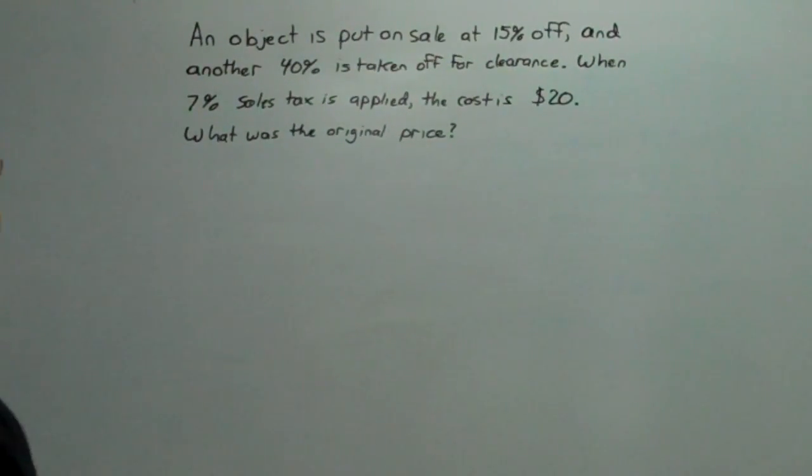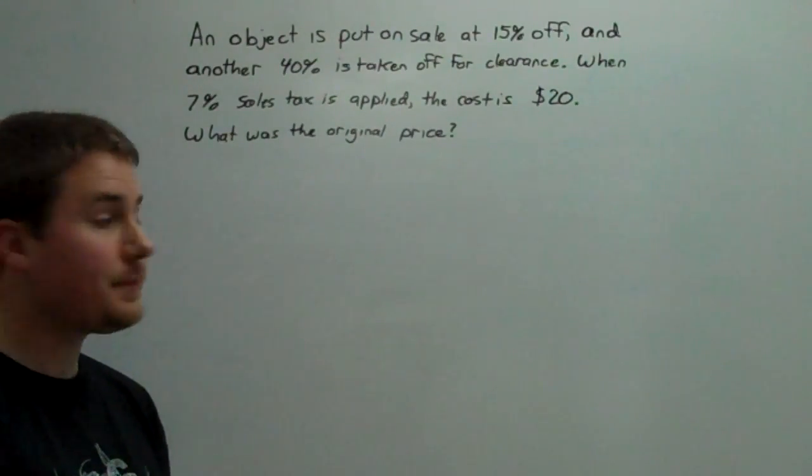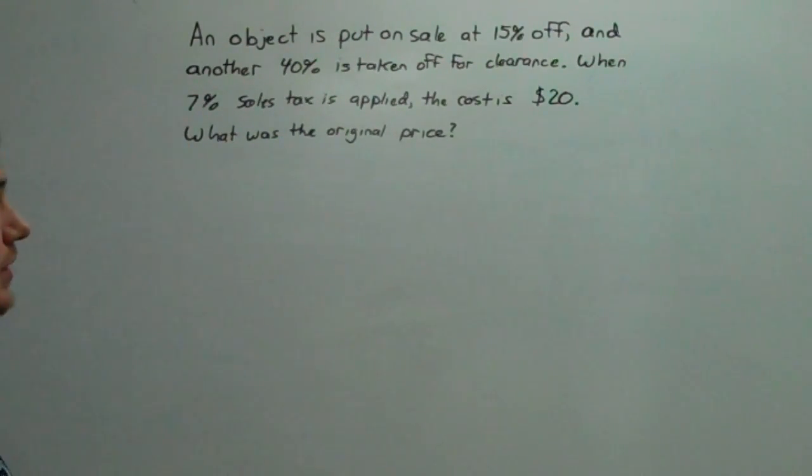All right, for this word problem, we're going to look at an object that is put on sale for 15% off, and another 40% is taken off for clearance. When a 7% sales tax is applied, the cost is now $20. So what was the original price?